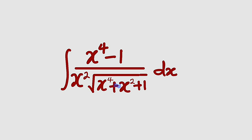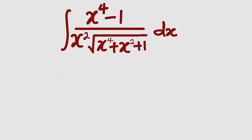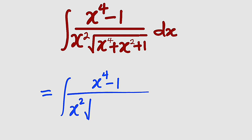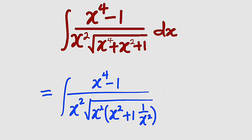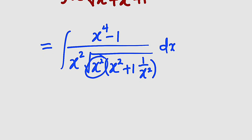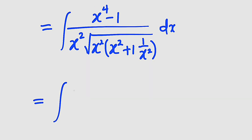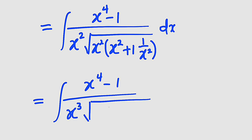I would like to start by simplifying our square root here. So we have the integral of x to the power of 4 minus 1 divided by x squared multiplied by the square root of — I can bring x squared outside. We have x to the power of 4 divided by x squared giving us x squared, then x squared divided by x squared is 1, then 1 divided by x squared, with respect to x. Since the square root of x squared is x, we bring the x out and it multiplies x squared giving us x to the power of 3. So this equals the integral of x to the power of 4 minus 1 divided by x to the third power, multiplied by the square root of x squared plus 1 plus 1 divided by x squared, with respect to x.